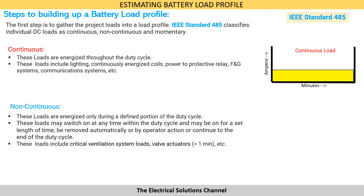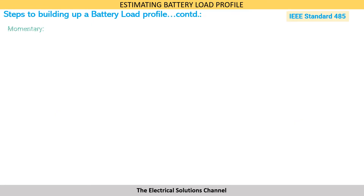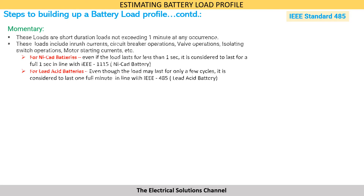Non-continuous loads are those which are energized only during a defined portion of the duty cycle. These loads may switch on anytime within the duty cycle, may be on for a set length of time, and can be removed automatically, by operator action, or continue to the end of the duty cycle. Examples include critical ventilation system loads and valve actuators. Momentary loads are short duration loads not exceeding one minute at any occurrence, such as inrush currents, circuit breaker operations, and valve operations.